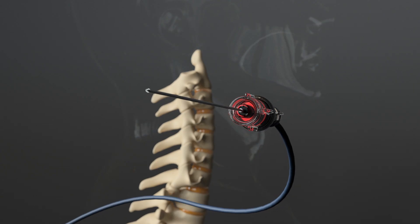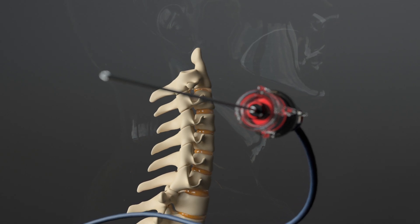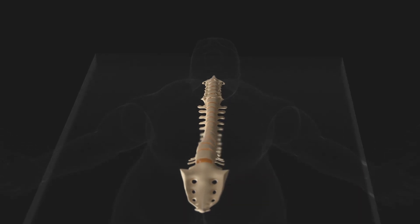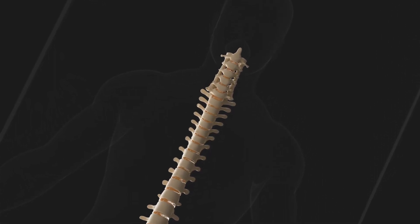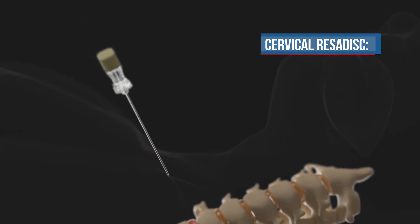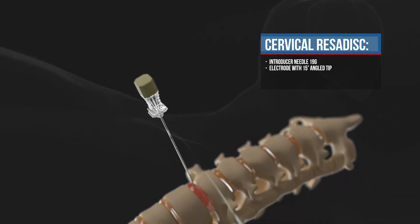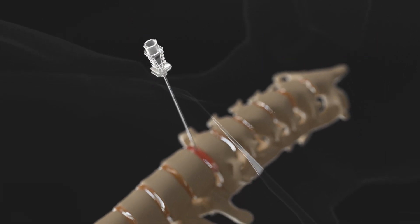The cervical decompression technique is performed with minimally invasive access, anterolaterally. Lay the patient in the supine position and undergo normal sedation procedures. Carefully spread the sternocleidomastoid muscle and the trachea so that the introducer can be positioned within the disc nucleus.